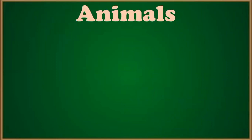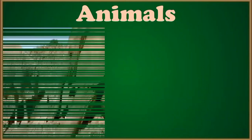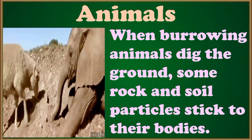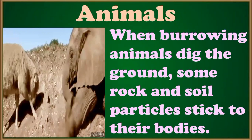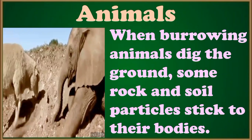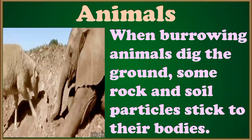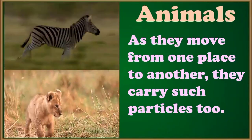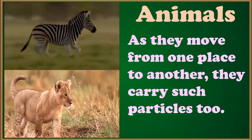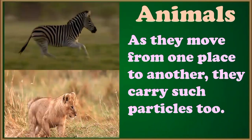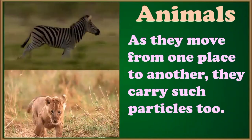The third agent of soil erosion is animals. When burrowing animals dig the ground, some rock and soil particles stick to their bodies. As they move from one place to another, they carry such particles too. That is why soil erosion happens.